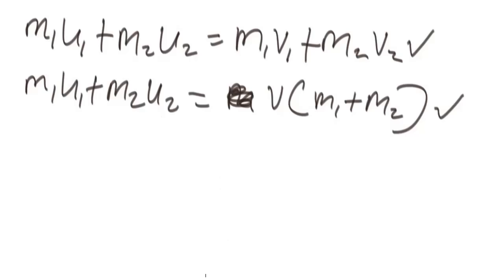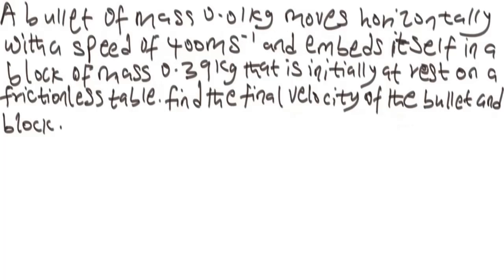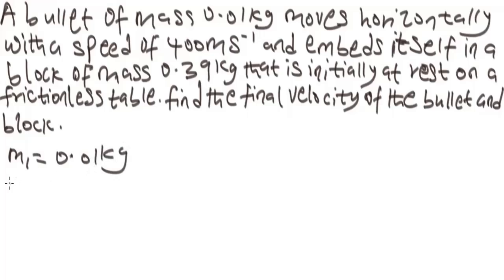Let's look at this question. It says: a bullet of mass 0.01 kg moves horizontally with a speed of 400 meters per second and embeds itself in a block of mass 0.39 kg that is initially at rest on a frictionless table. Find the final velocity of the bullet and block. So let's get the parameters. We have our M1 to be 0.01 kg. We have our U1 to be 400 meters per second.